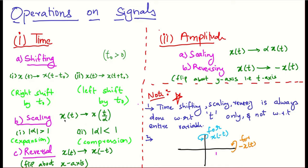What is time scaling? If x(t) is changed to x(t/alpha), then it is said to be time scaled. If mod alpha is greater than 1, it is said to be an expanded version of x(t). And if mod alpha is less than 1, it is said to be a compressed version of x(t). And if x(t) is changed to x(-t), it is said to be time reversed. Coming to amplitude operations: if x(t) is changed to alpha times x(t), its amplitude is multiplied by a value alpha. And if x(t) is changed to minus x(t), its amplitude is reversed.